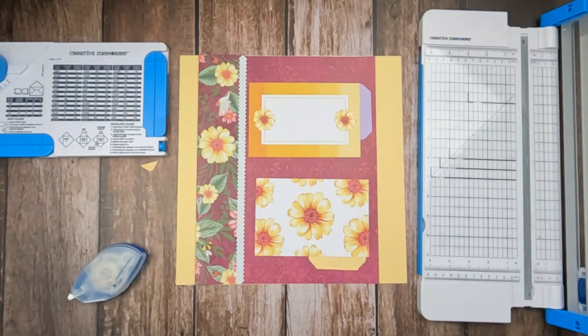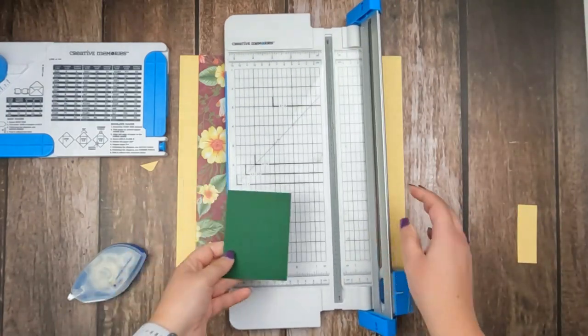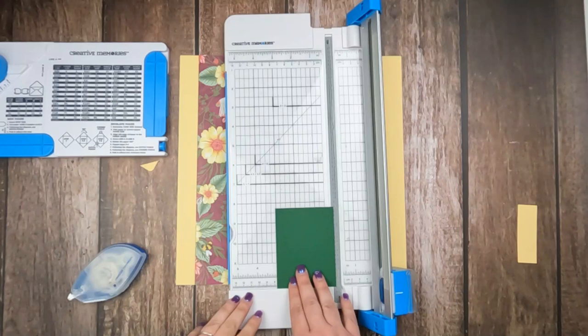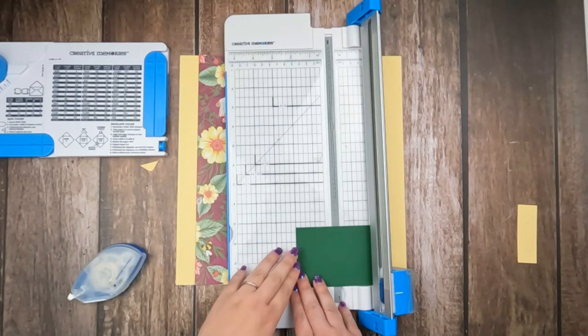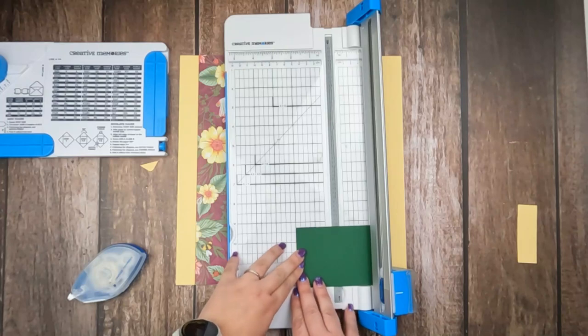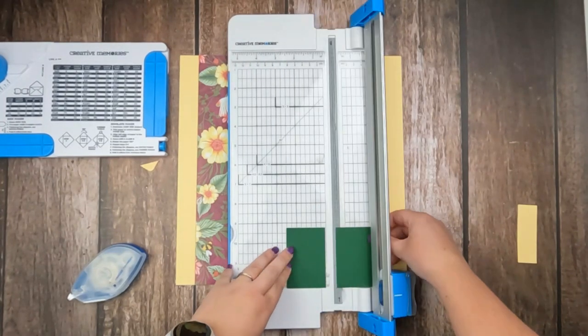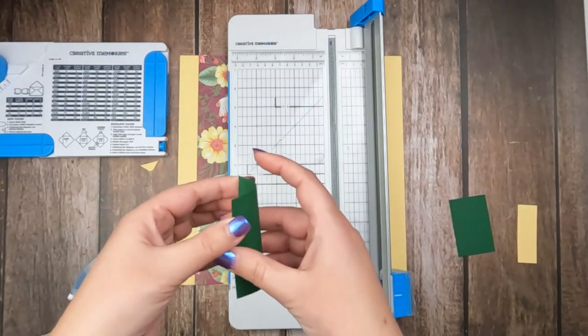These work especially well when you're using a dark background that's going to be hard to write on. So now I've given myself a nice little space that's going to be easy to write some caption information. So it's super simple to cut these once they're done if you want a thinner, more streamlined look.